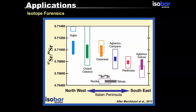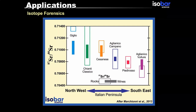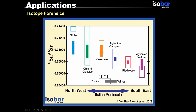You can also use strontium isotopes to study food fraud and the authenticity of foods. Here is another nice example done in Italy. The open boxes denote the strontium signature of the geological units, and the solid blocks show the strontium signature of the wines produced in every region. Normally, you would expect the wine to mimic the strontium signature of the geological setting, because wine grows on soil and rocks and should represent the signature of the rock.